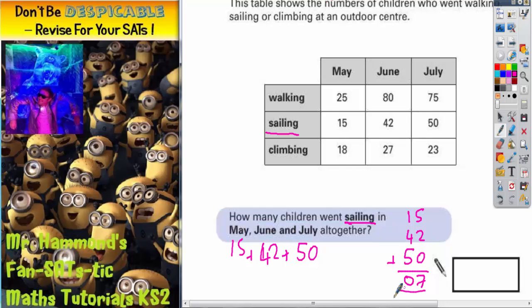Put your 0 in, carry your 1. Since we've finished with no more columns left, that 1 can just go straight in there. So the final answer is 107 children going sailing in May, June, and July altogether.